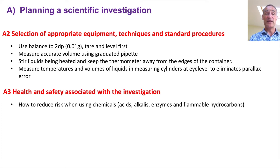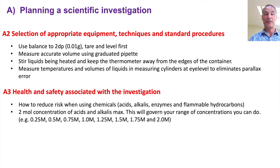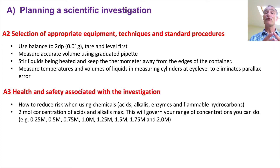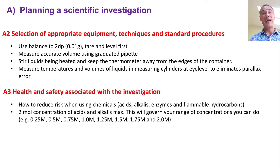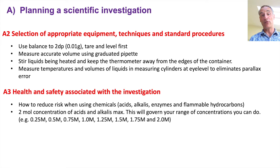What about health and safety? You need to say how to reduce the risk of using chemicals like acids, alkalis, enzymes and flammable hydrocarbons. You need to know that two molar concentration of acids and alkalis is the maximum you can use, and this could govern the range of concentrations you work with. In any practical investigation you should have at least five different values — I would suggest seven to eight — across the biggest possible range. So your maximum range for acids will be two molar.